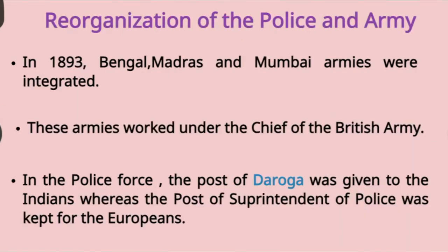The next change by the British government was the reorganization of the police and army. In 1893, the Bengal, Madras and Mumbai armies were integrated. These armies worked under the chief of the British army. In the police force, the post of Daroga was given to Indians, whereas the post of Superintendent of Police was kept for Europeans.